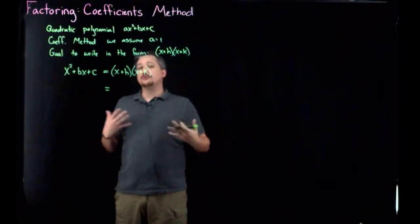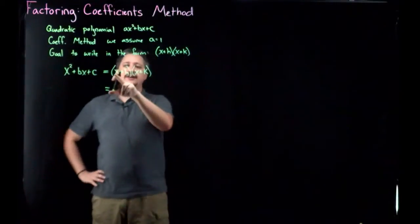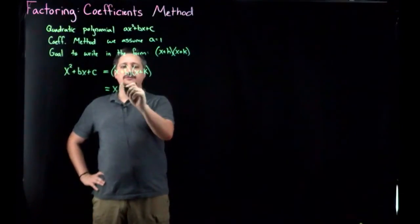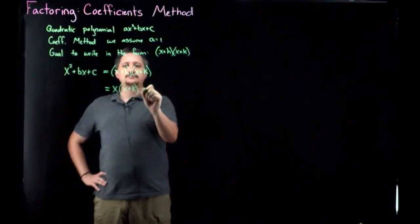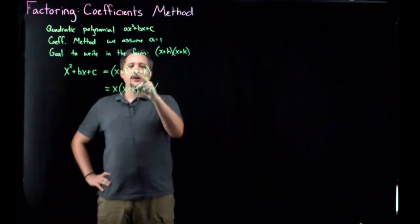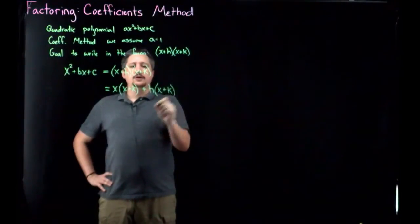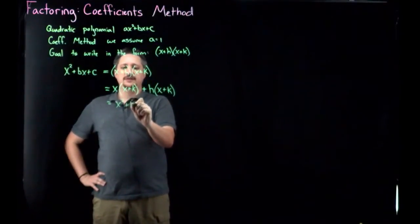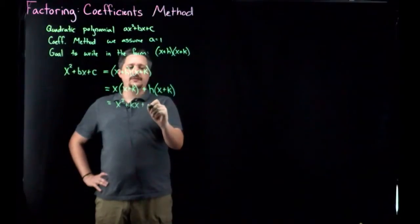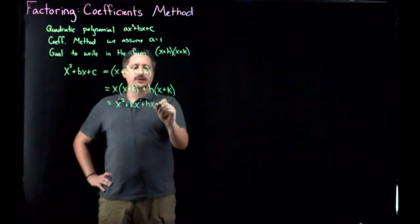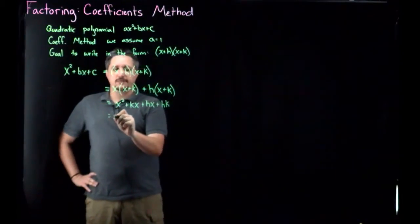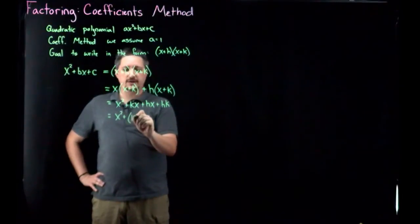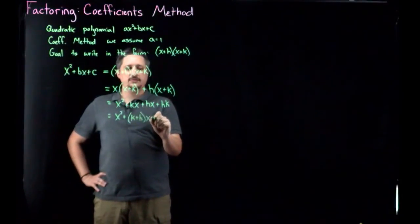So the more general version that always works is that you want to take each thing in here and multiply it against all of that. So I would have x times all of this x plus k, plus h times that x plus k, and then do that again. So x times x is x squared, x times k is kx, plus h times x is hx, and h times k. And combining like terms, it gives me this has a common x, so I can factor that out to get k plus h times x plus hk.